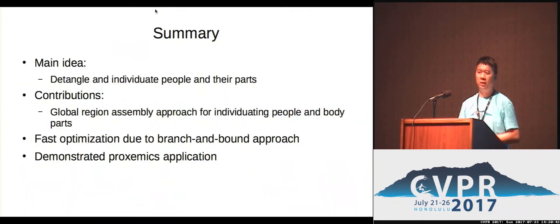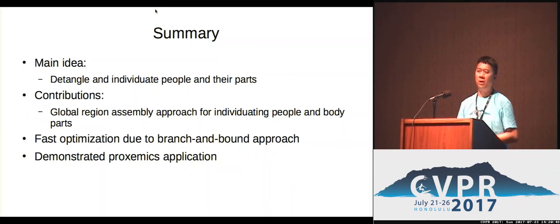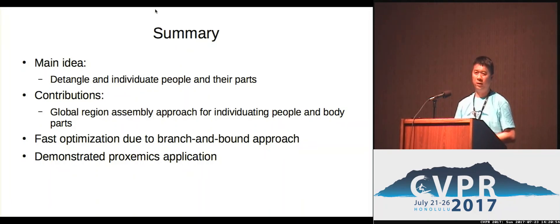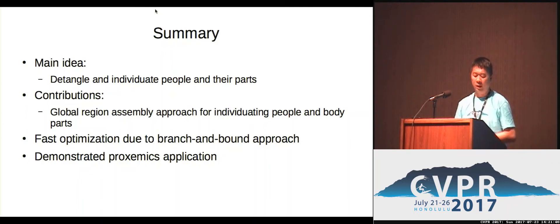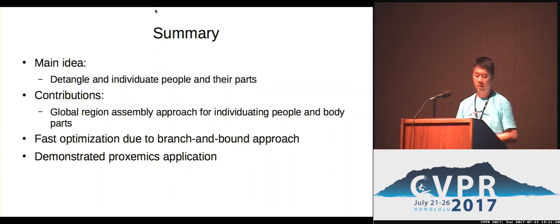In summary, we tackle the challenging problem of detangling multiple people in crowded images. Our contribution is that instead of depending on previous frameworks such as people detectors or figure detectors, we directly assemble all the regions together — regions that can come from many different methods, with no constraint on their source. We develop a very efficient algorithm that globally optimizes the energy function and demonstrate the usefulness of our method on the proxemics recognition task.